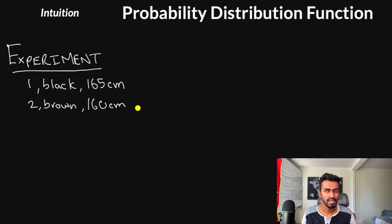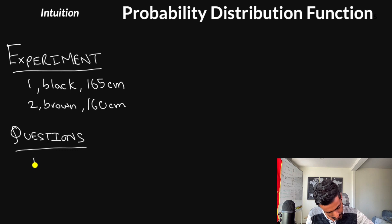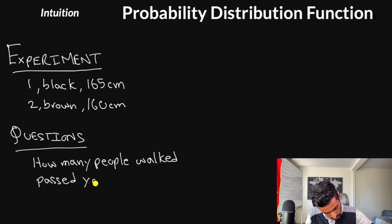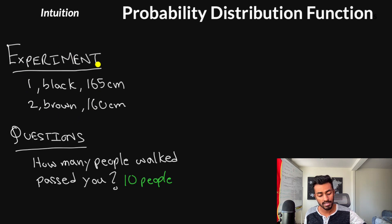Now, based on this experiment, we can actually ask ourselves a few questions. And one question that we can ask ourselves, for example, is during the experiment duration, how many people actually walked past us? Now, for the sake of this experiment, let's say that we did see something like 10 people. All right, so this setup is pretty cool. We conducted some real-world experiment, and we're able to derive some measurable quantity as the outcome of that real-world experiment.